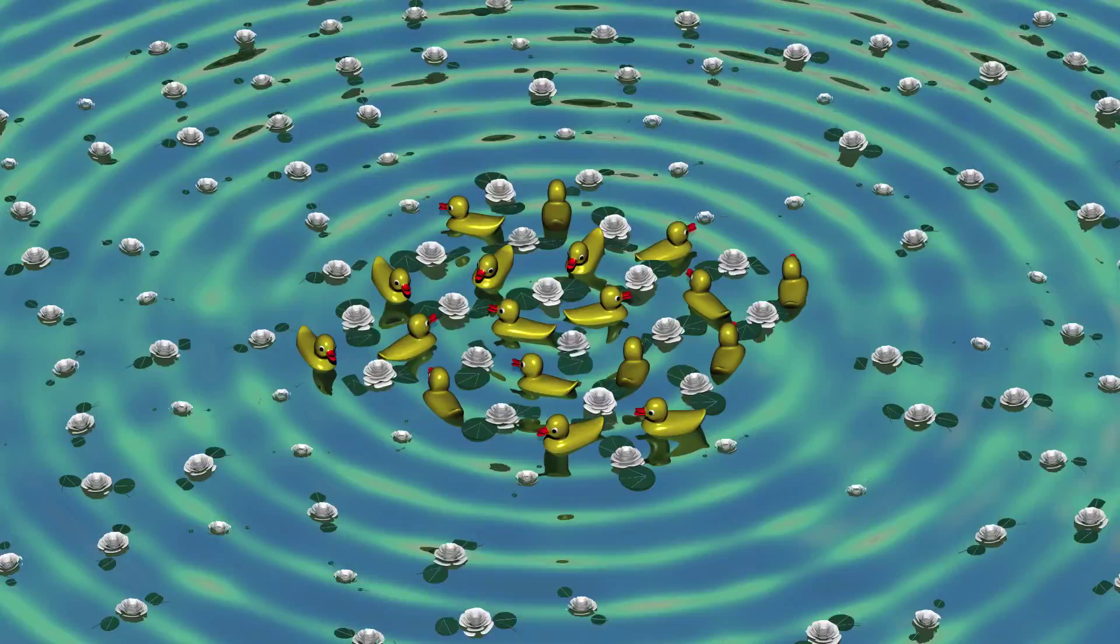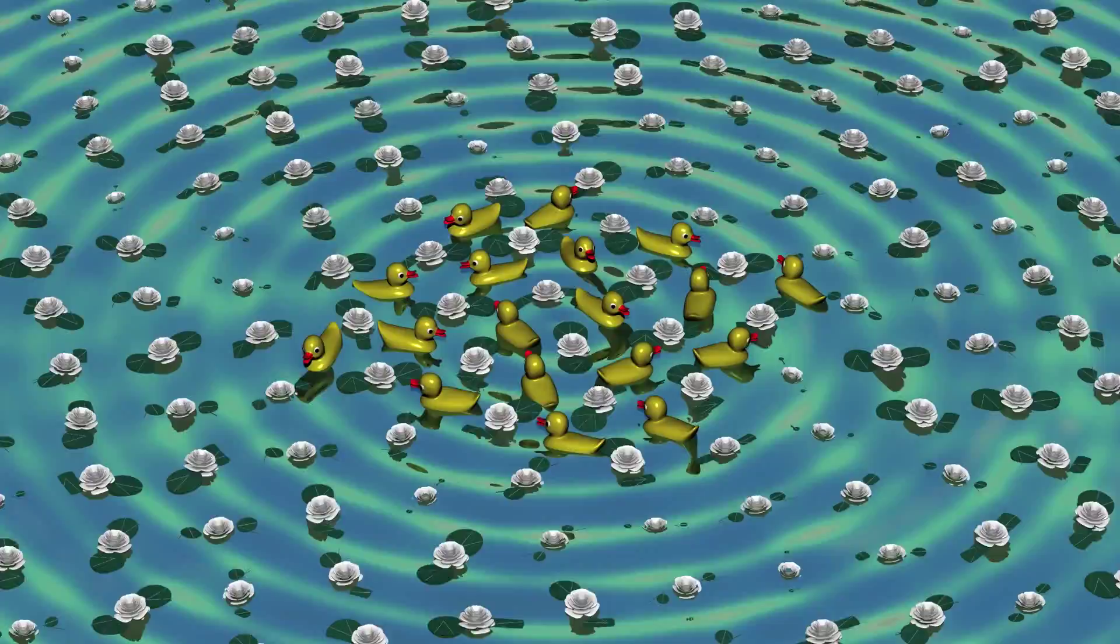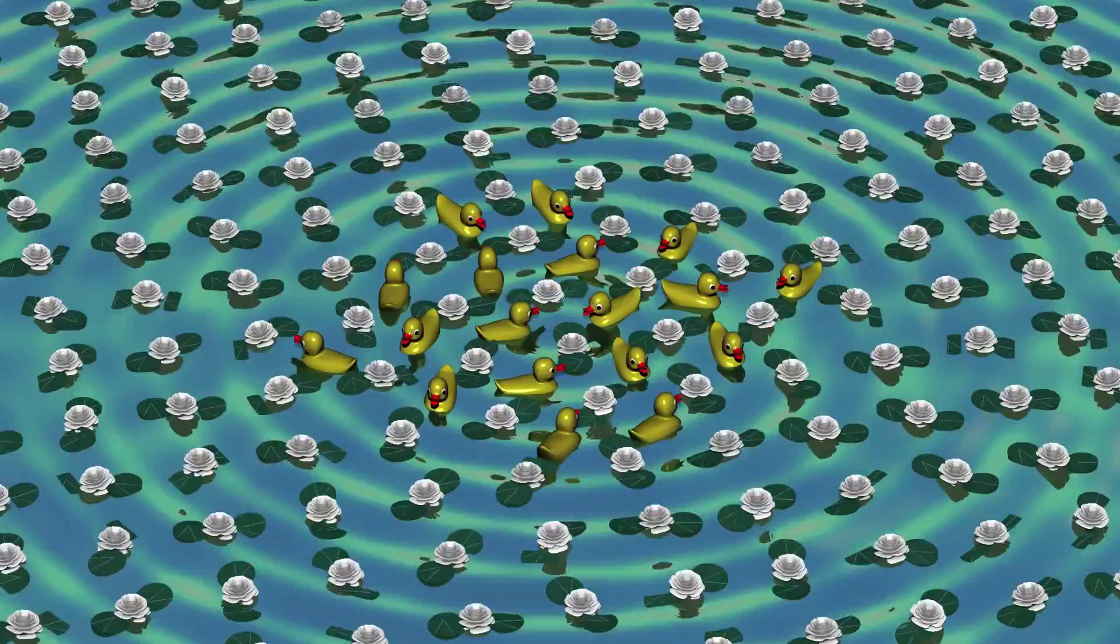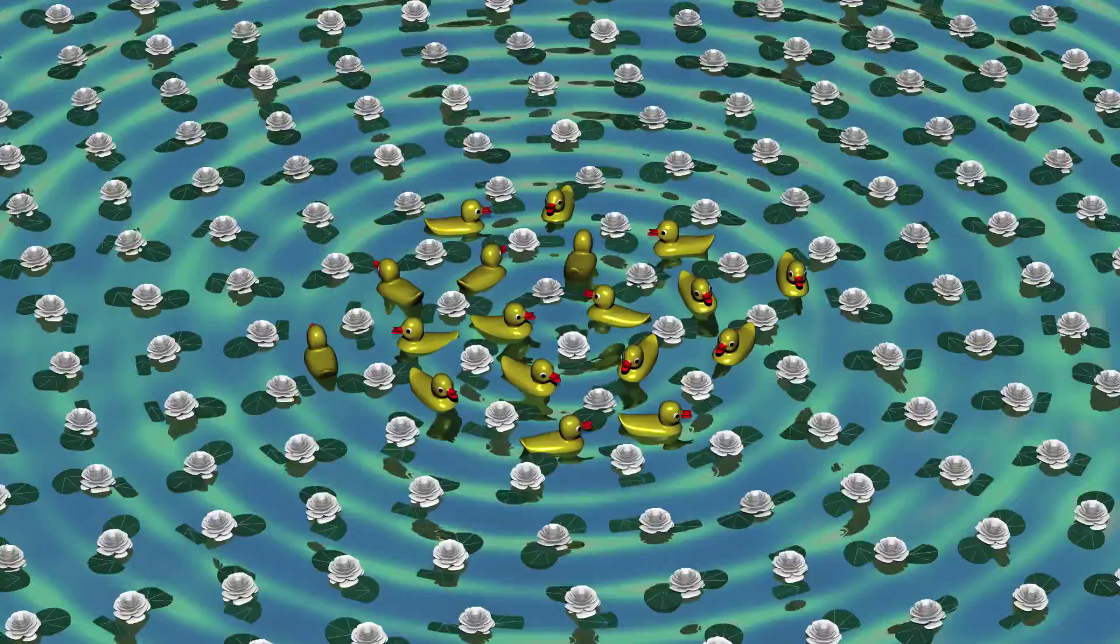See the ducks eating the water lilies. When there are only a few ducks, then they eat only a few lilies. The water lily population therefore grows rapidly. When there are few ducks and many water lilies, the ducks are well fed and their number increases.